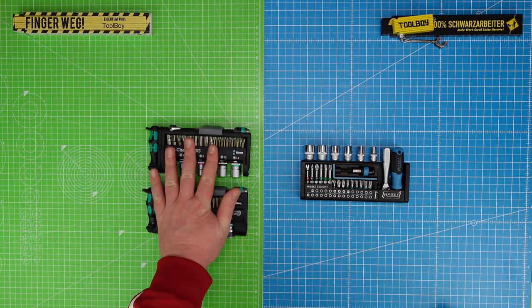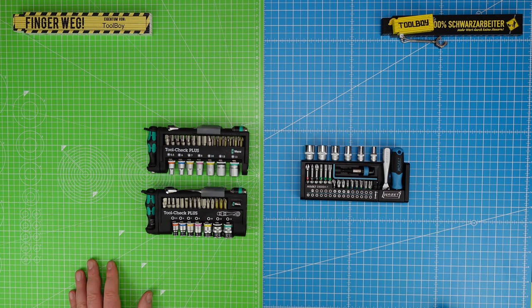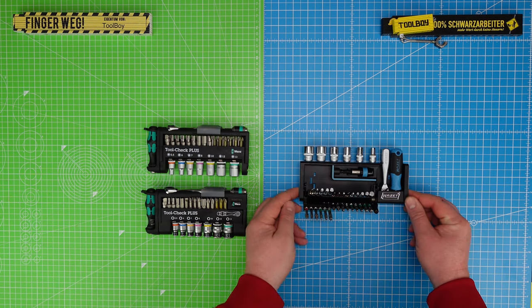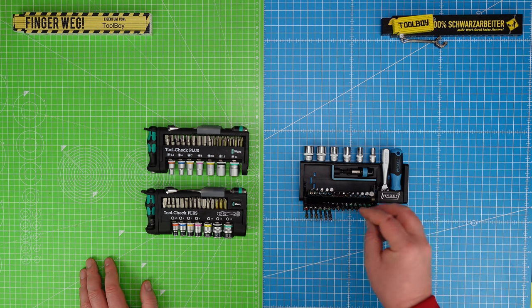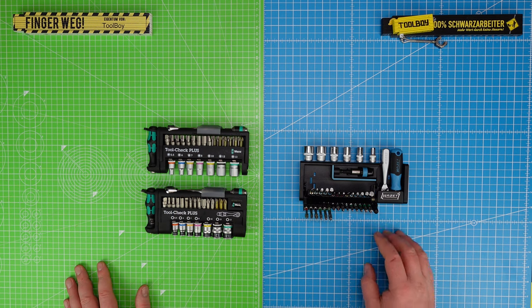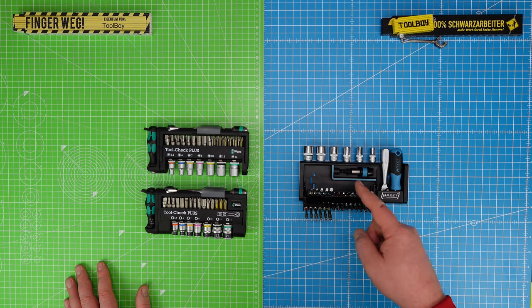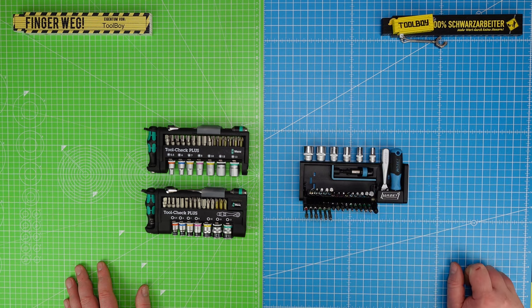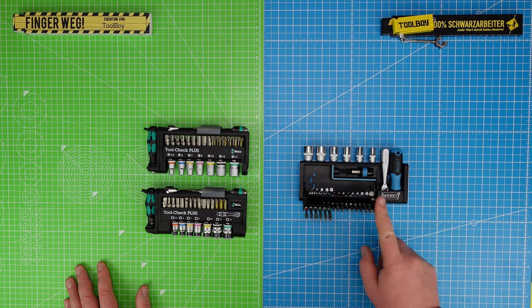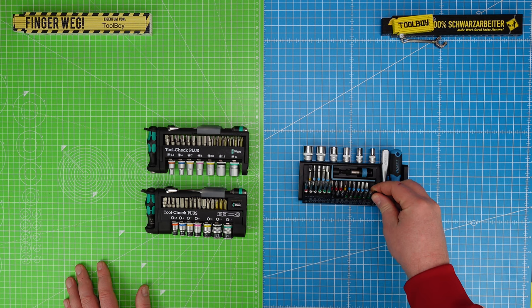The HZ has a button that opens it via a spring, which is great because even though they're similarly tight as in the Tool Check, the fact that they open up and lay flat on the workbench makes them very accessible. They have 50mm bits included - eleven pieces, and 18 bits in 25mm length that are color-coded. Everything the heart desires is included - Pozidriv 1 to 3 once each in the short version and also in the long version.